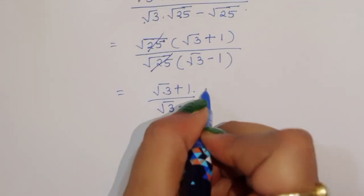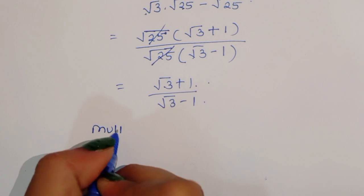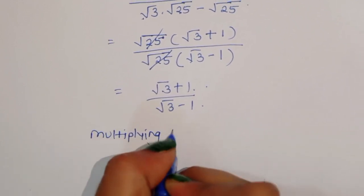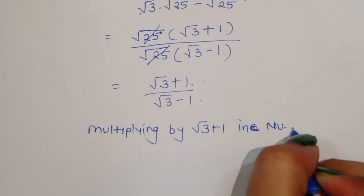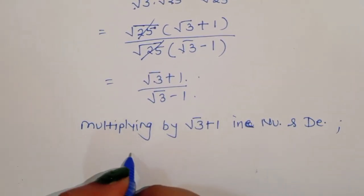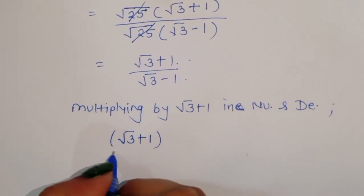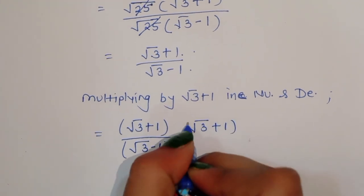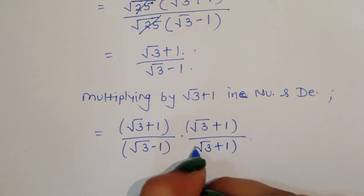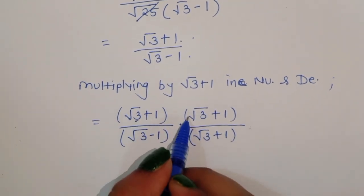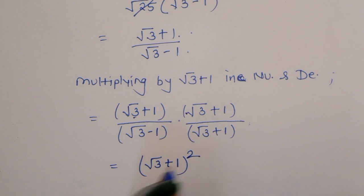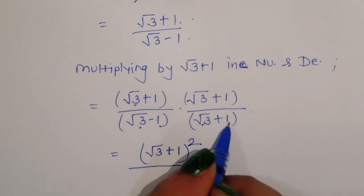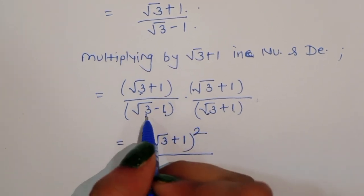Now we rationalize by multiplying both numerator and denominator by square root of 3 plus 1. In the numerator we get square root of 3 plus 1 times square root of 3 plus 1, which equals square root of 3 plus 1 squared. In the denominator, square root of 3 minus 1 times square root of 3 plus 1 is of the form a minus b times a plus b, so we apply the identity a squared minus b squared.